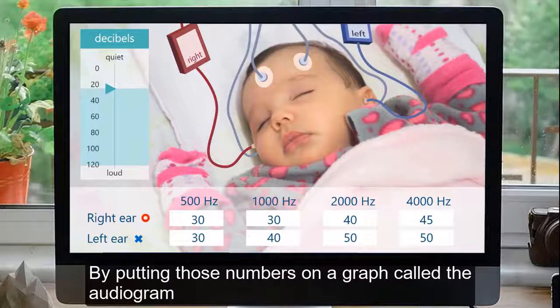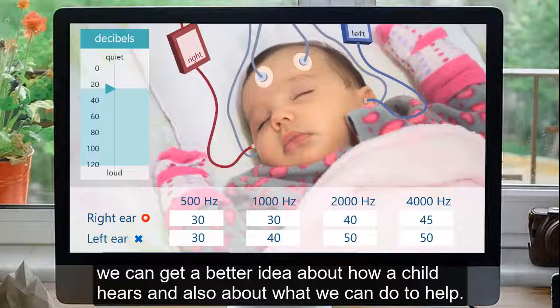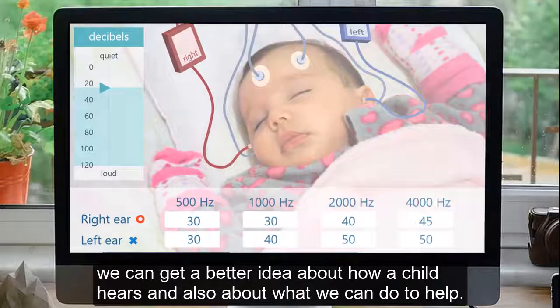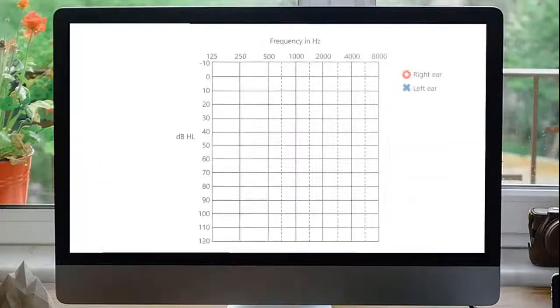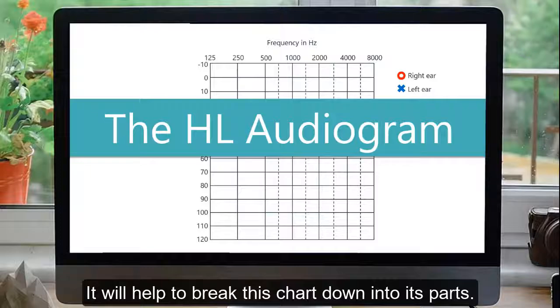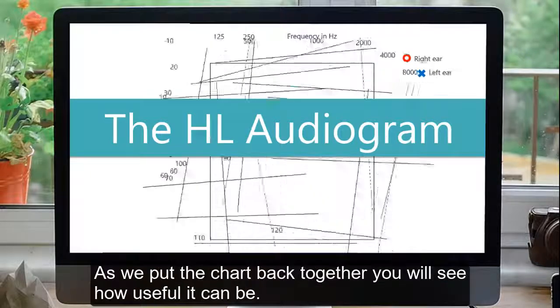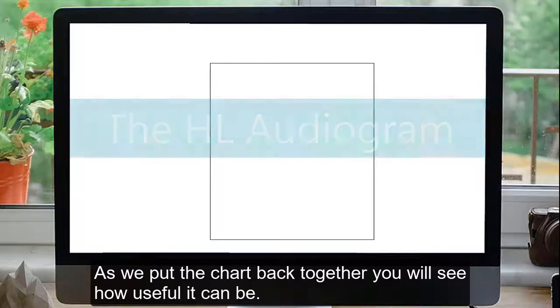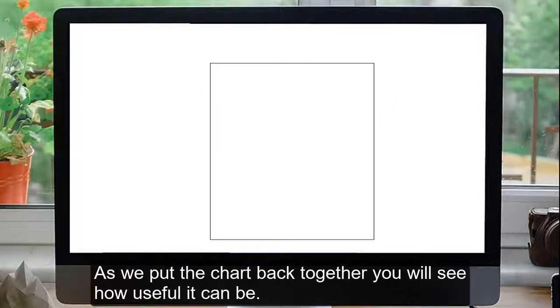By putting those numbers on a graph called the audiogram, we can get a better idea about how a child hears and also about what we can do to help. The HL audiogram is a chart that helps us put the results of a hearing test into perspective. It will help to break this chart down into its parts. As we put the chart back together, you will see how useful it can be.